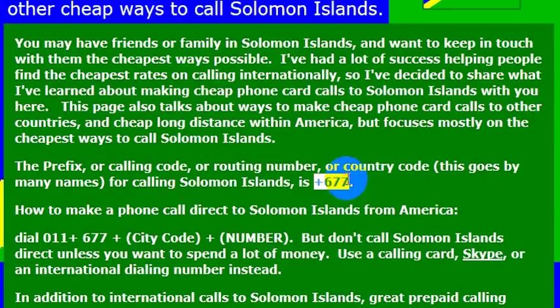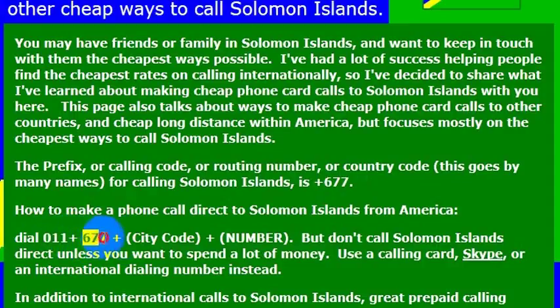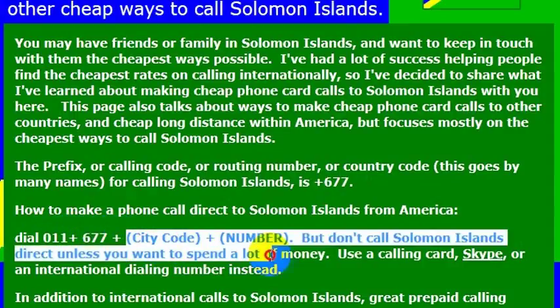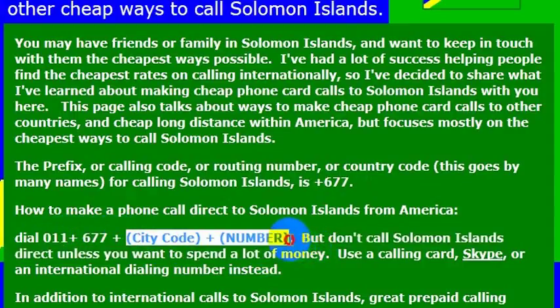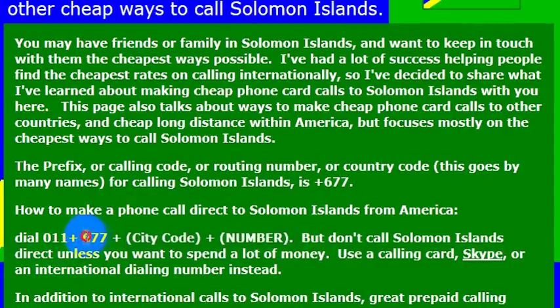The country code for the Solomon Islands is 677. So to reach the Solomon Islands, I would dial 011, which is the international dialing code from the United States, then I would dial 677, the country code for the Solomon Islands, and then the phone number that I would like to reach. Again, the country code for the Solomon Islands is 677.